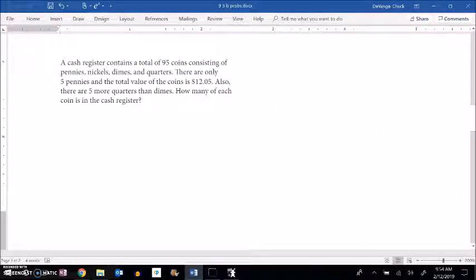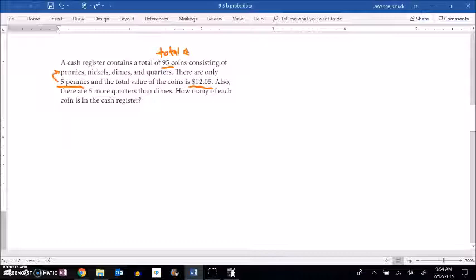Contains a total of 95 coins. More coins. Total number of coins is 95, consisting of pennies, nickels, dimes, and quarters. Oh my gosh, there's 4 here. There are only 5 pennies. Oh, okay, so there's really not 4. Like we know the number of pennies, so that's okay. And the total value is $12.05. Well, let's write what we know from here.